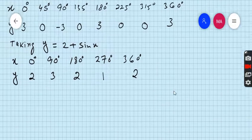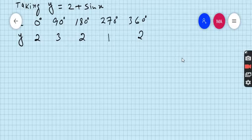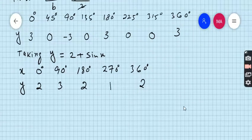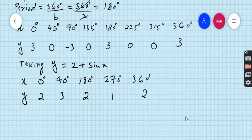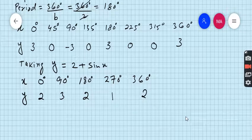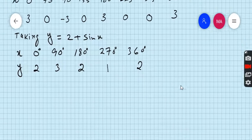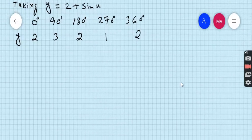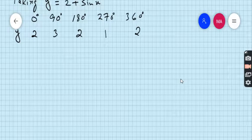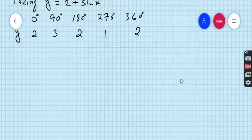Now draw x and y axis. The maximum value in both the tables is 3 and the minimum value in both the tables is minus 3. And obviously, domain is 0 to 360 degrees, which is given in the question.